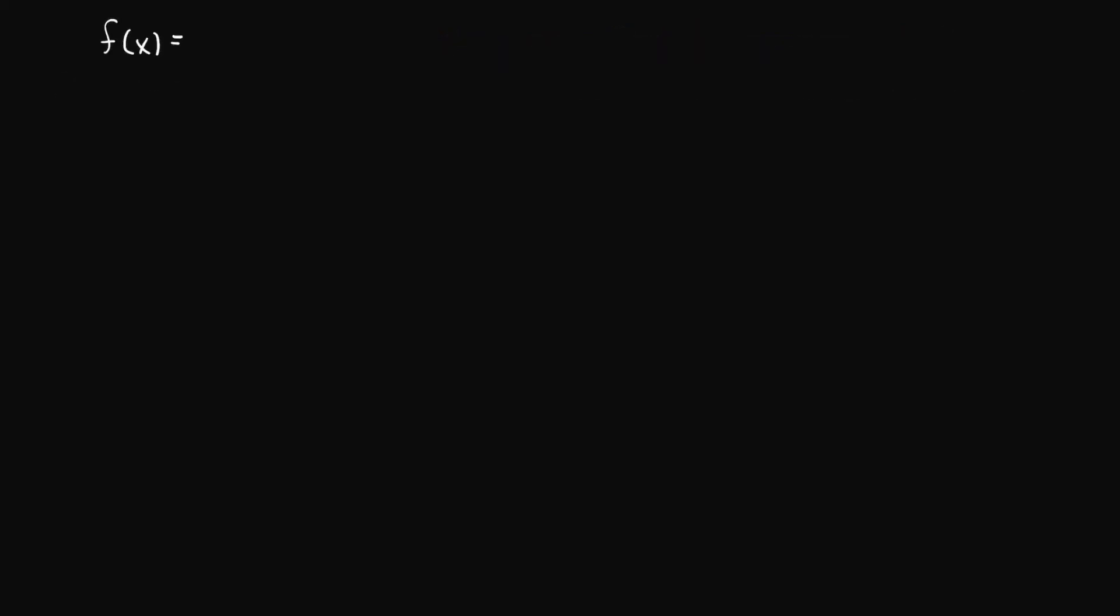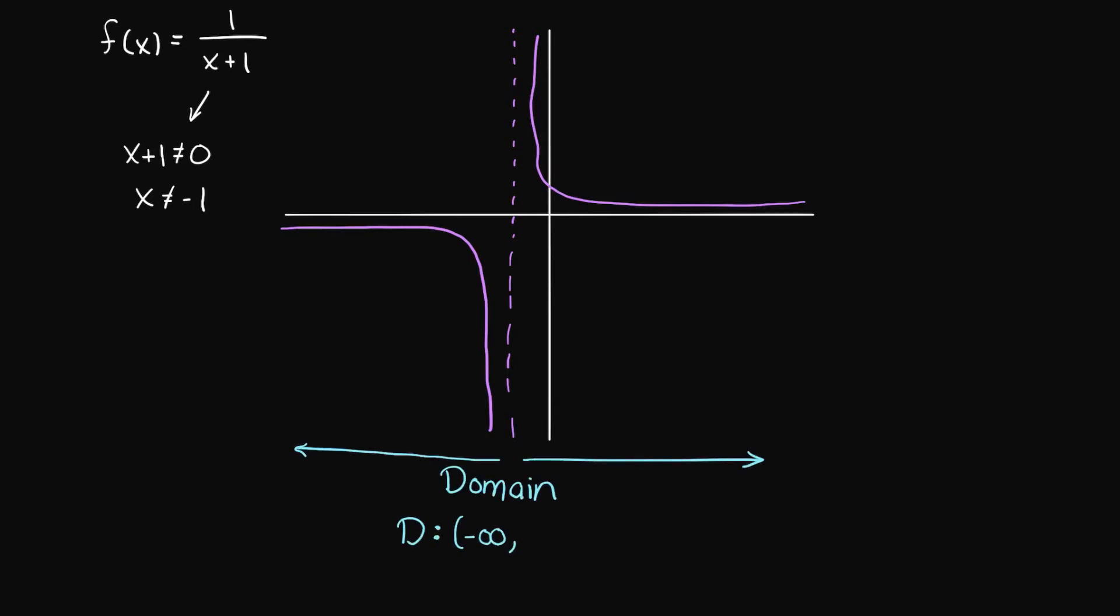What if we have a function 1/(x+1)? The domain has a hole at -1, so the domain is all real numbers except for -1. For this function, the graph looks like this. For this function, both domain and range are not defined at -1, so we write that like so.